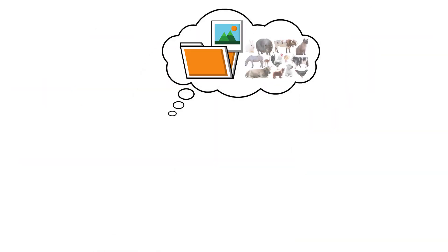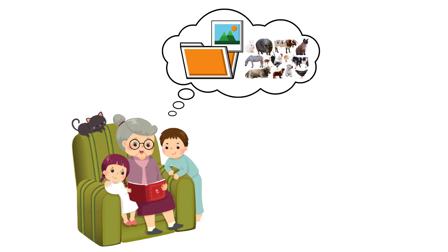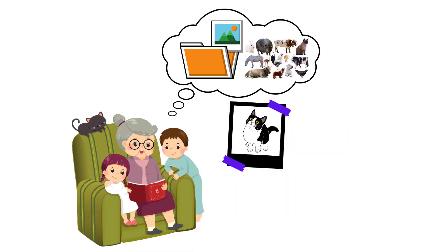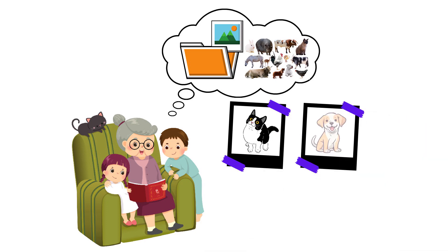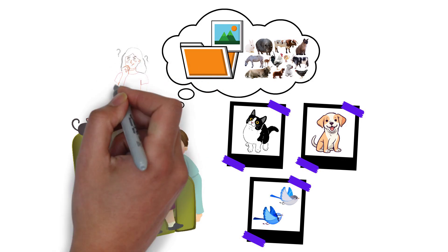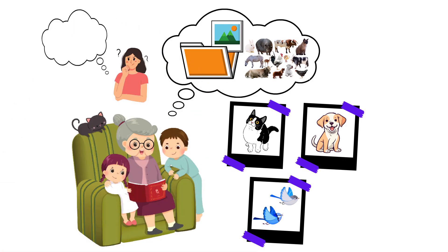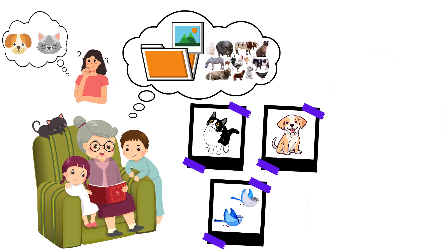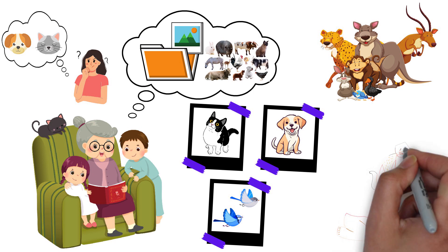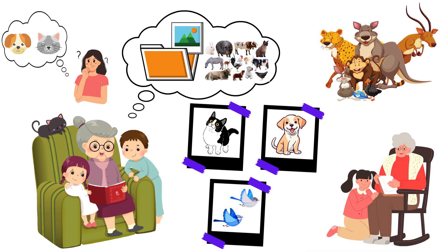Imagine you have a big folder of animal pictures, but you don't tell your grandchild what each animal is. You start by showing them pictures of cats and saying, this is a cat. Then you show pictures of dogs and birds, and you keep saying what each one is. Your grandchild starts to notice patterns, like cats have whiskers and dogs have floppy ears. Over time, they become really good at telling animals apart, even if they've never seen that specific animal before. They're learning from the examples you gave them.